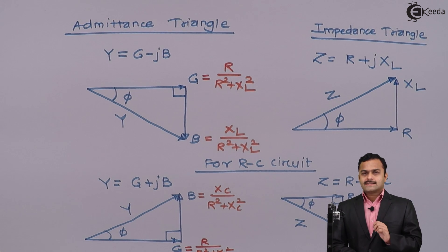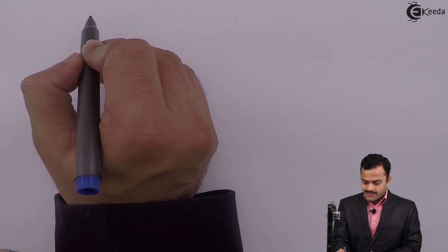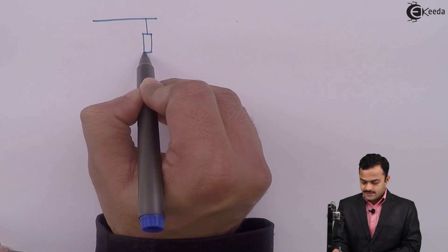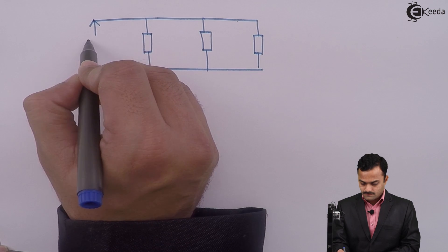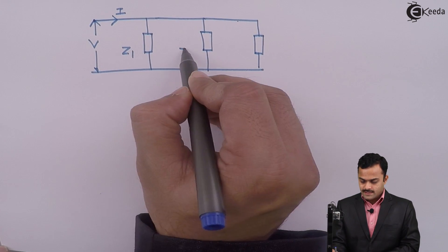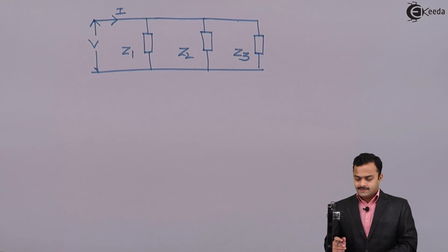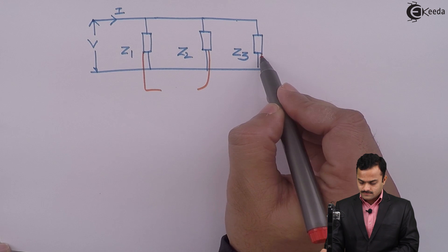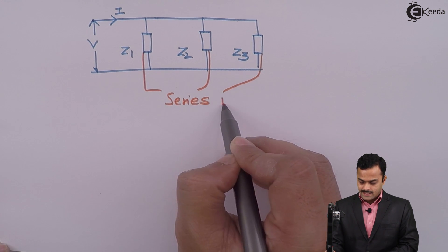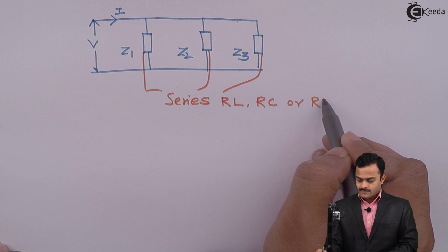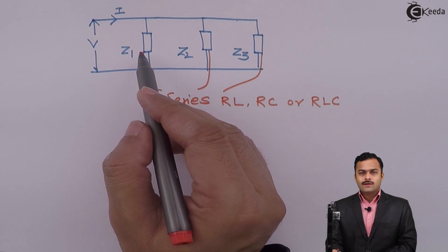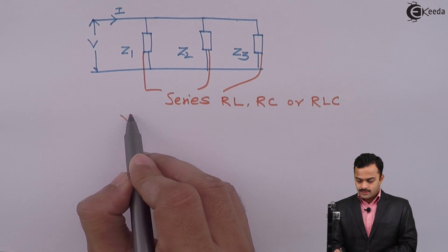In a parallel circuit, instead of impedance, we talk in terms of admittances. In parallel circuits, we will have several parallel branches whose impedances are given. Let's take Z1, Z2, Z3. All these impedances are either series RL circuit, or series RC circuit, or series RLC circuit. What you have to do is convert all the impedances into corresponding admittances.